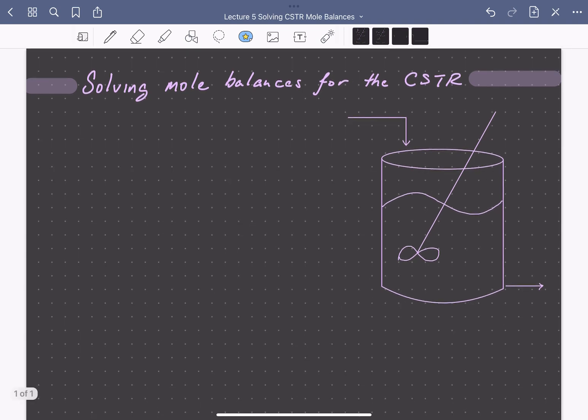Let's look at the general mole balance and simplify it for the CSTR. For species J, the molar flow rate in minus the molar flow rate out plus the generation of species J by reaction is equal to the accumulation of that species in the reactor with time.